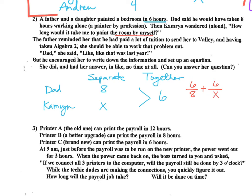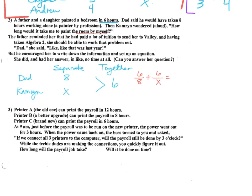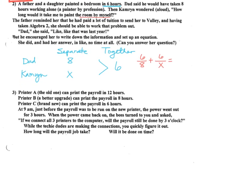So you're going to set it up together over separate for dad, plus together over separate for Cameron. So that's six over eight plus six over X. And that should equal what? One, right? That's the complete, one complete job. So this is your setup, right? Six over eight plus six over X equals one. What do you need to do to that?